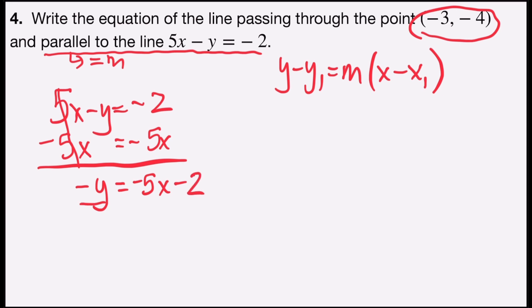One step left: divide everything by negative one. So y would equal -5 divided by -1 is positive 5x, and -2 divided by -1 is positive 2.